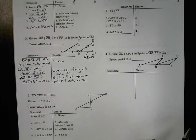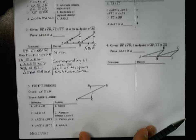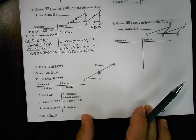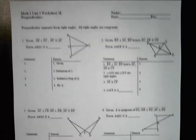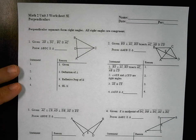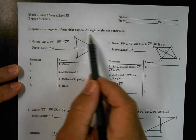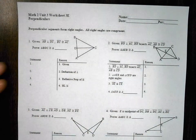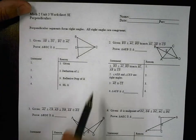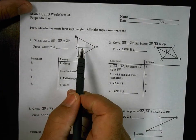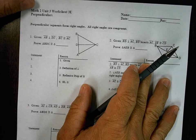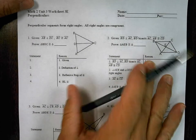I'm going to leave problems 2, 4, and 5 for you to do. This one's an error correction, so that's a good challenge. Let's go to problem one here on 3E. In this case, we're talking about perpendicular segments — BA and DC are going to be the perpendicular segments. Remember, perpendicular lines means right angles, so we're probably going to use hypotenuse-leg.